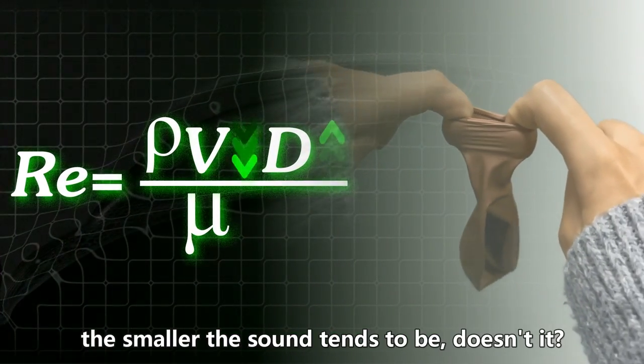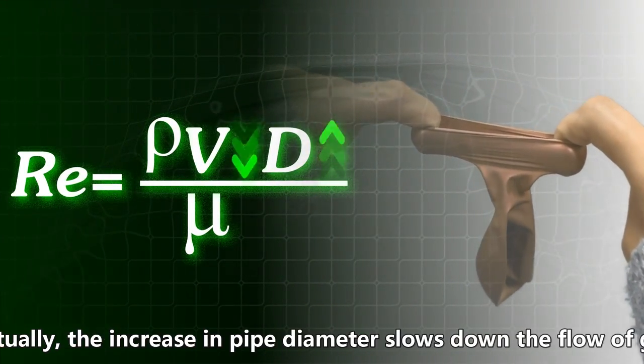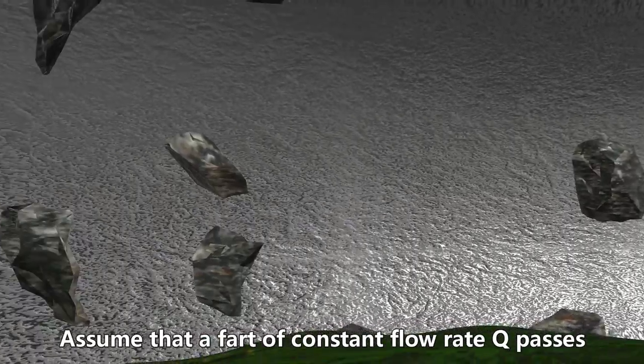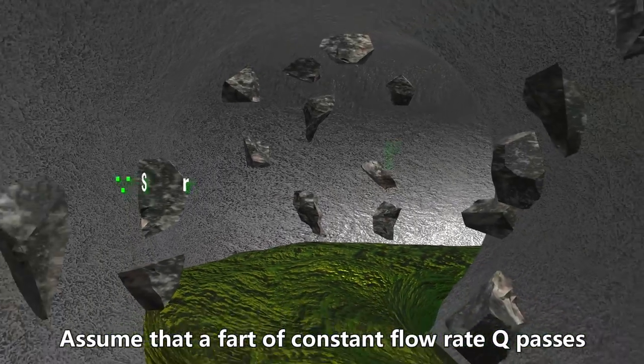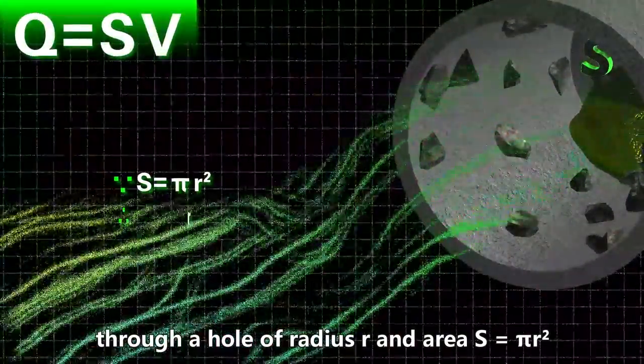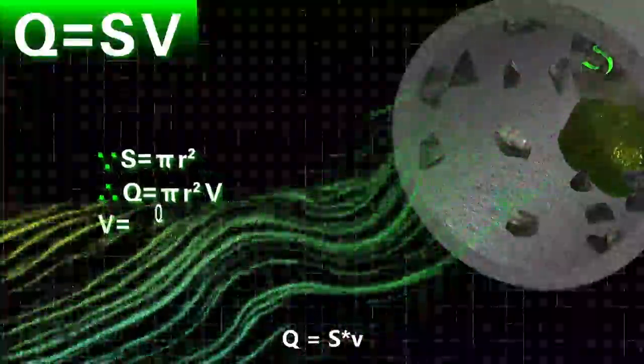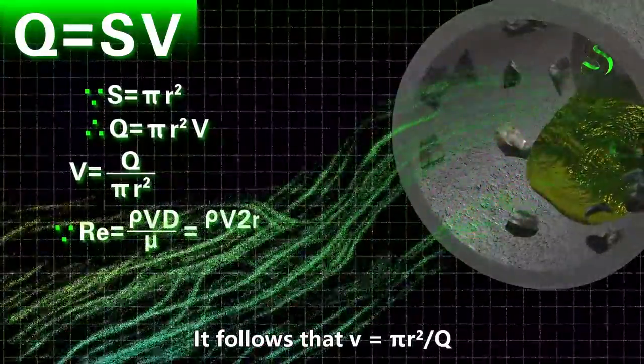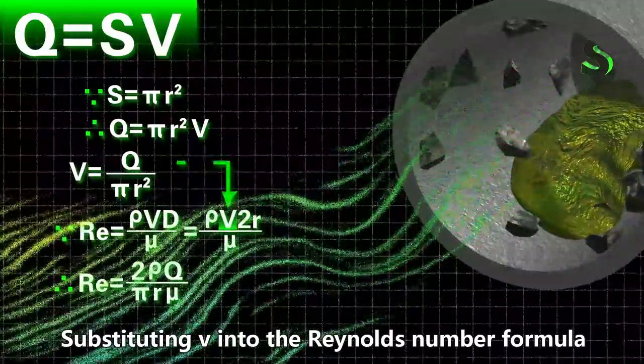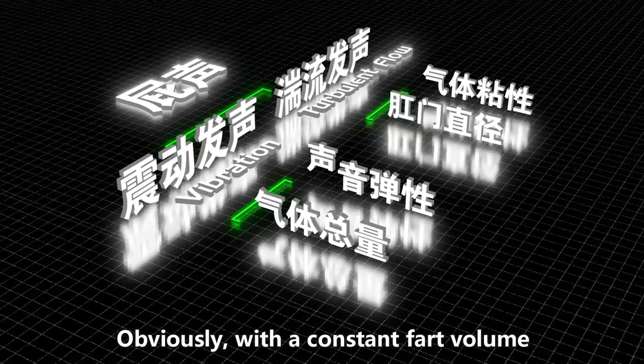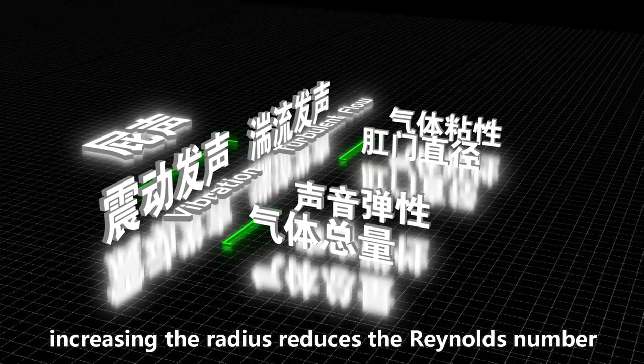But have you ever noticed a larger diameter tends to produce a smaller sound? Actually, an increase in pipe diameter slows down the flow of gas. Assume that constant flow rate Q passes through a hole of radius R and area S equals πR². Q equals S times V. It follows that V equals Q divided by πR². Putting V into Reynolds number formula gives the following result. Obviously, with constant fart volume, the increase in radius reduces Reynolds number.